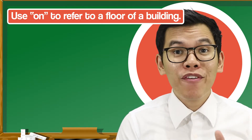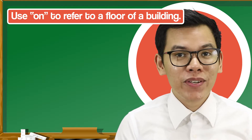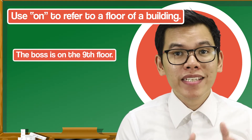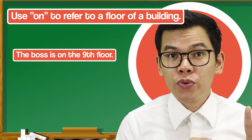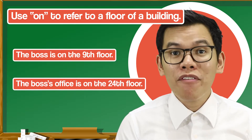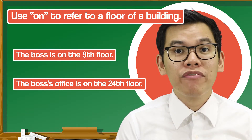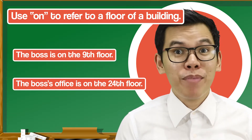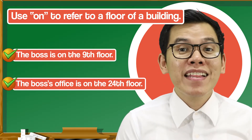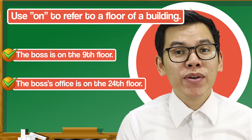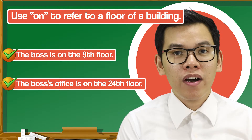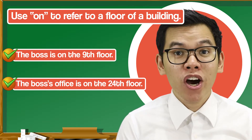The next rule is we use 'on' to refer to a floor of a building. For example: 'The boss is on the ninth floor' and 'The boss's office is on the 24th floor' — both are correct. So whenever someone asks for a location or floor of a building, use 'on.'